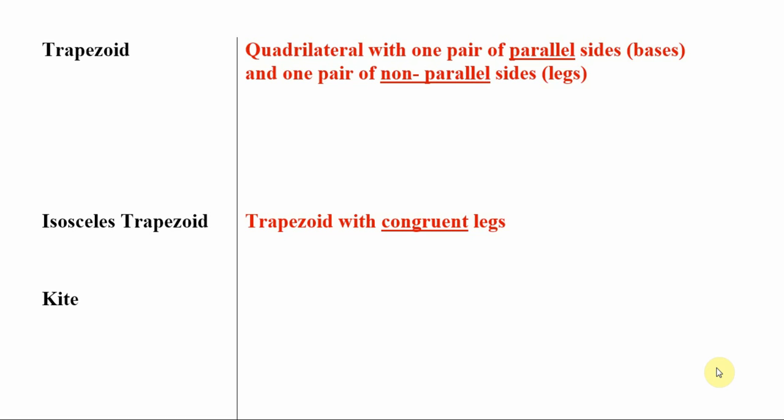So it's always helpful now, after we have the definition, to take a look at a couple of pictures. So let's get right to that. Okay, so suppose I have a trapezoid that looks like so. So let's name this shape A, B, C, D.